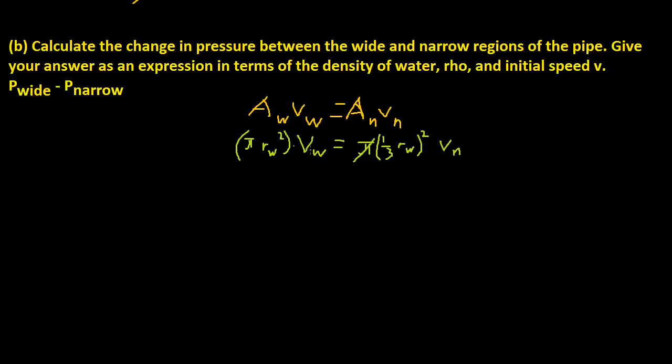And if we rearrange this, we get radius of the wide is equal to 3 times radius narrow. So pi r wide squared times v wide equals pi, and instead of r narrow we plug in one-third r wide squared times v narrow. The pi cancels out, and if you multiply this out it becomes one-ninth because 3 squared is 9, and r wide squared cancels out. So we're left with v wide equals one-ninth v narrow, or 9 v wide equals v narrow. So basically what this is saying is the velocity of the water in the narrow pipe is 9 times greater than the velocity in the wider pipe.